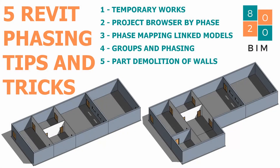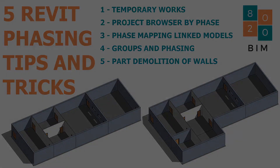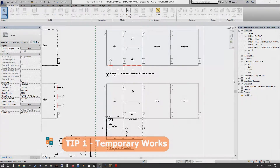Hi guys and welcome back to the 8020 BIM channel. Today we're going to run through five tips and tricks for Revit phasing. Our first tip revolves around temporary works creation using phases, second is organizing the project browser by phase, third is phase mapping and linked files, fourth is phasing and groups, and fifth is about demolishing the external finish of a wall to prepare for an additional finish. Post any questions in the comment section below.